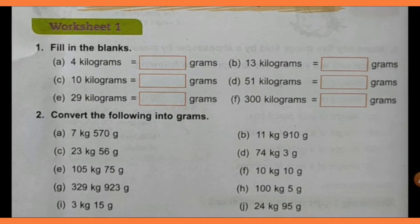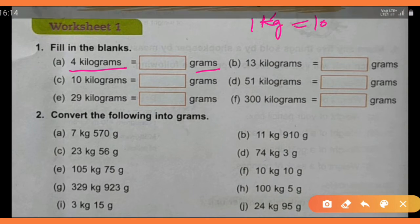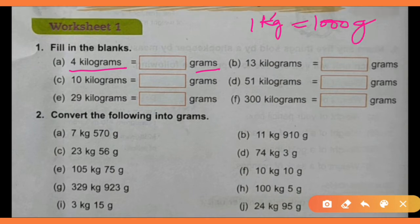Now worksheet number 1, question number 1 — fill in the blanks. Part A: 4 kilograms. They asked that 4 kilograms is equal to how many grams. We know that 1 kilogram is 1000 grams, so 4 kilograms is equal to 4000 grams.